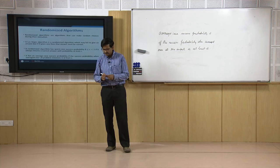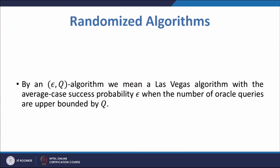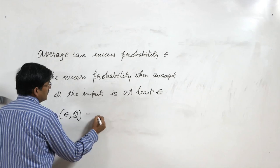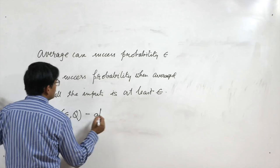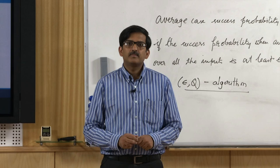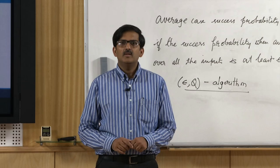Epsilon is between 0 and 1. We have another terminology: an epsilon-Q algorithm is a Las Vegas algorithm with average case success probability epsilon when the number of oracle queries is upper bounded by Q. We call an algorithm an epsilon-Q algorithm if its average case success probability is epsilon when we are allowed to make at most Q queries.